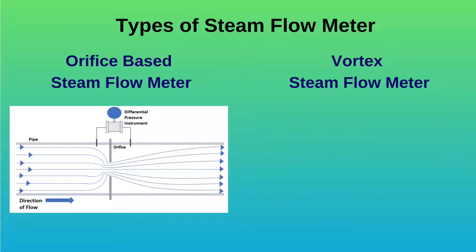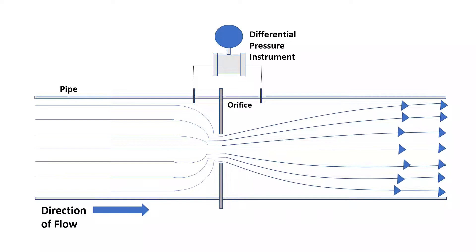Orifice flow meter is a differential pressure flow meter relying on the change in pressure as steam flows through an element such as a nozzle, orifice, or venturi.